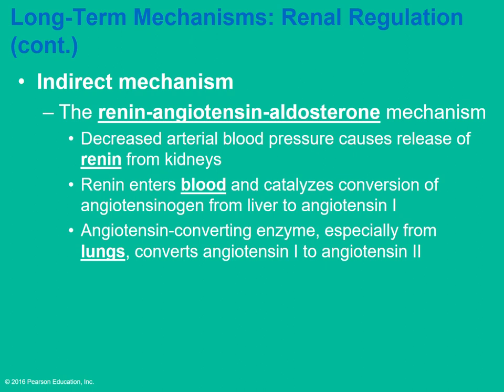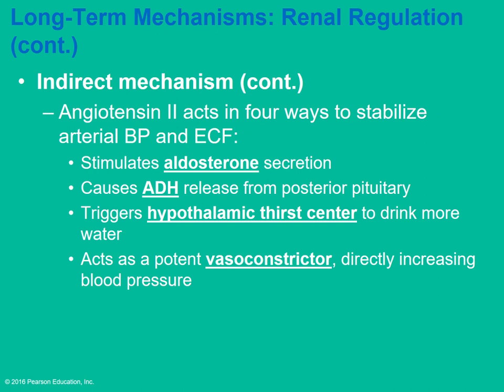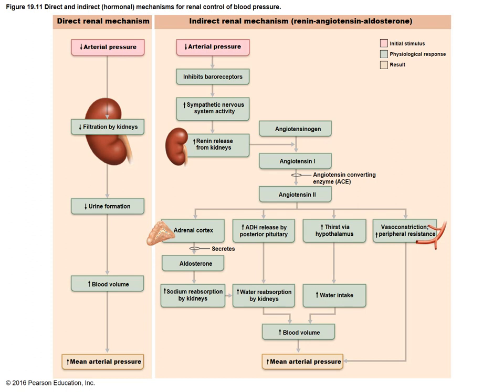The indirect renal mechanism involves the renin-angiotensin-aldosterone system. When blood pressure decreases, the kidneys release renin, which enters the blood and converts angiotensinogen from the liver to angiotensin I, which is then converted to angiotensin II in the lungs. Angiotensin II stimulates aldosterone secretion, stimulates ADH release, activates the thirst center, and acts as a vasoconstrictor — all working to increase blood pressure.